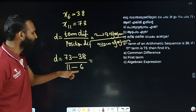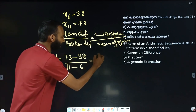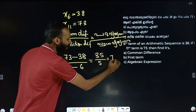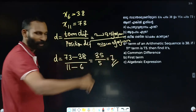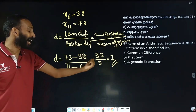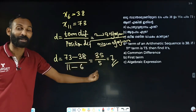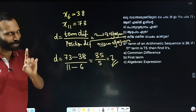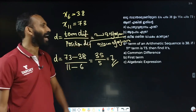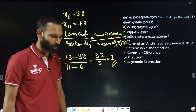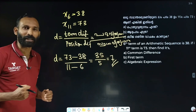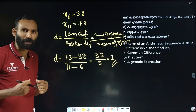So the common difference equals 73 minus 38, divided by the position difference.